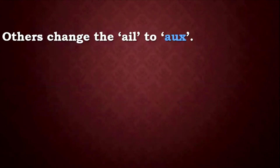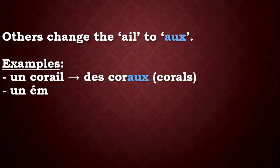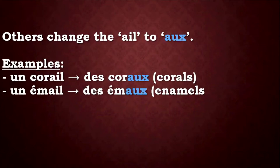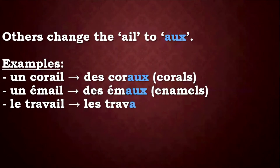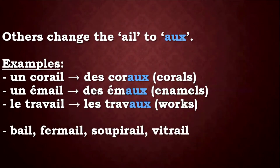Now there are other nouns that also have -AIL, but this time around they use -AUX to get the plural — that is, they change -AIL to -AUX. Let's look at examples: un corail, des coraux. Un émail, des émaux. Le travail, les travaux.